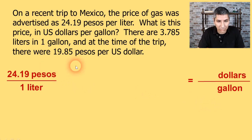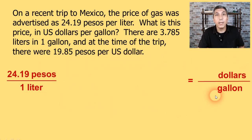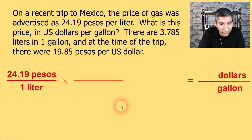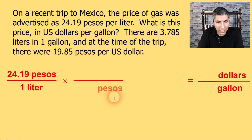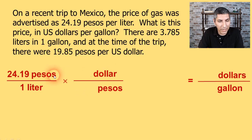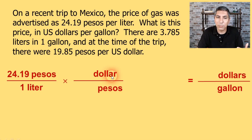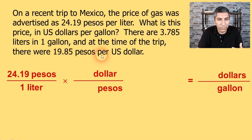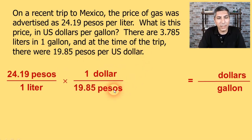We're going to have to convert pesos to dollars and liters to gallons. I'll convert pesos to dollars first. In my first conversion factor, pesos go on the bottom and dollars on top, so pesos will cancel. How many dollars are equivalent to how many pesos? The problem says 19.85 pesos per one US dollar — so $1 over 19.85 pesos. Now I can cancel pesos top and bottom.